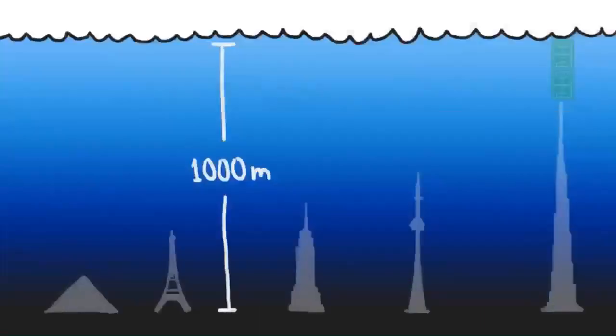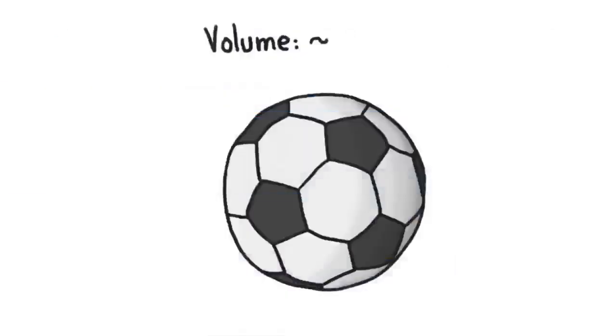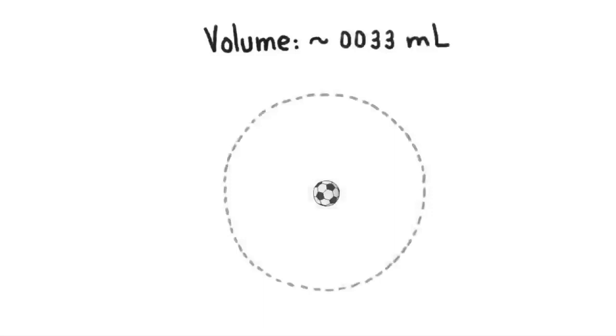Surviving in this environment requires some extraordinary adjustments. 1,000 meters down, the pressure is over 100 times what we experience at the surface, enough to compress the air in a soccer ball to the size of a ping-pong ball and a half.